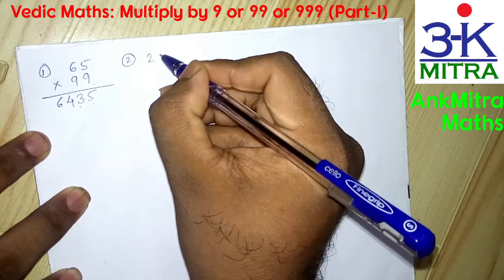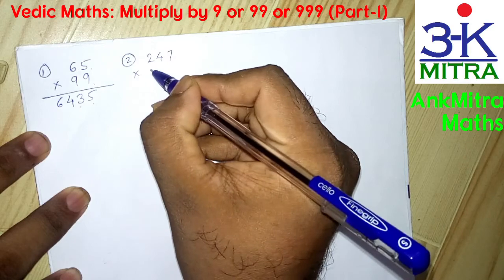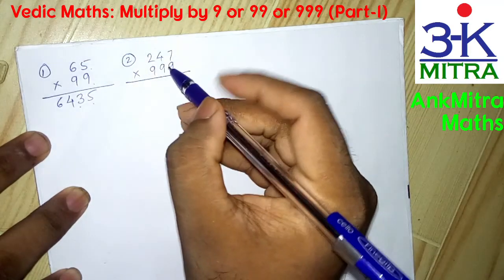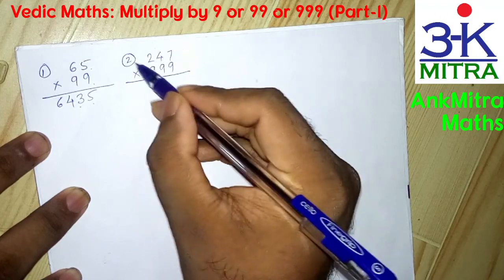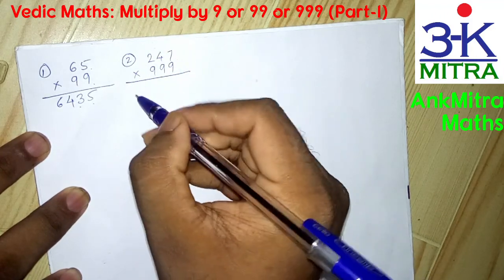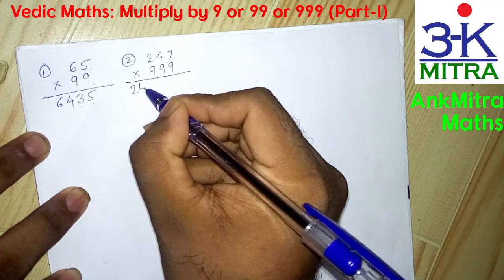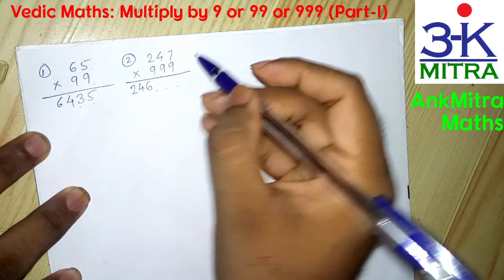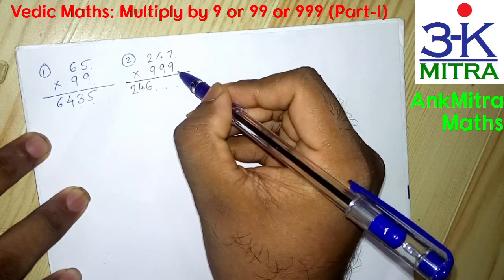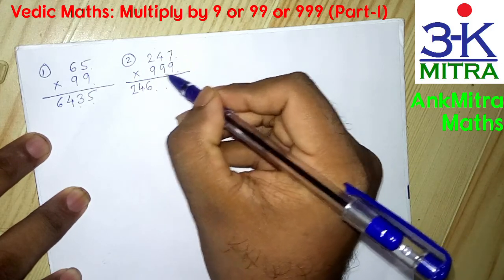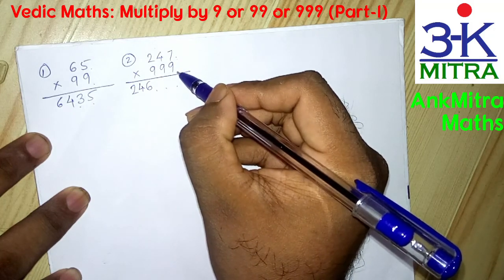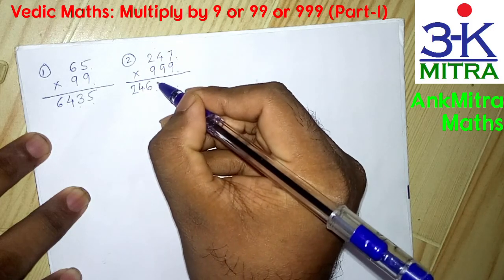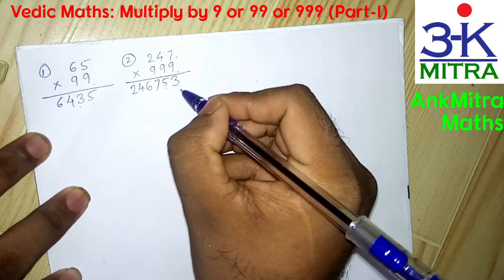Let's say we are supposed to multiply 247 by 999. Equal number of digits again. In similar fashion, we reduce 1 from 247 to get 246, and write down 246. Then we have 3 place values to fill, so we subtract 247 from 1000 — 1000 being the base number for 999 — and we get 753. The answer for 247 multiplied by 999 is 246753.